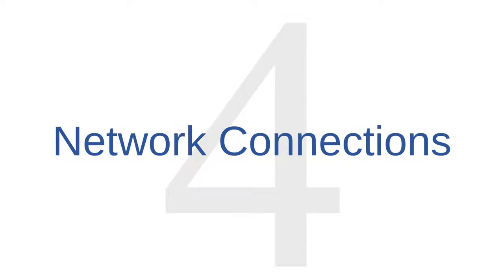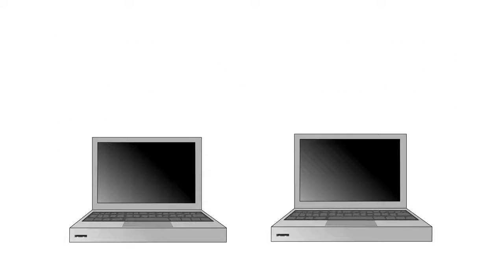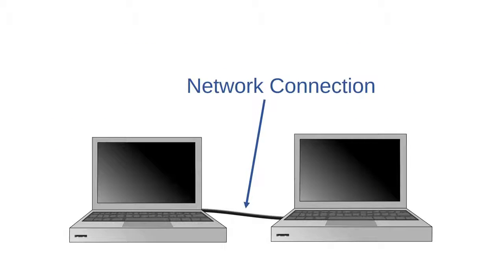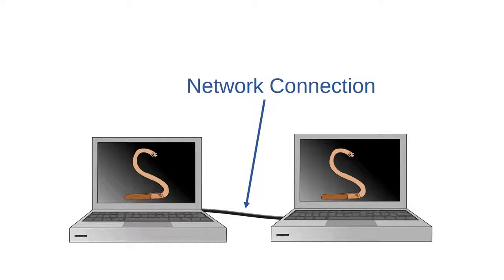Malware source number four is network connections. Some malware don't even need human assistance to reproduce and infect new computers. These malware, usually called worms, distribute themselves across networks without victims having to interact with them at all. Any time you're connected to a network — either a private network or the public internet — it's at least possible that your computer could contract a worm from another computer on the network. It doesn't matter whether it's a wired or wireless connection; worms can spread across either.